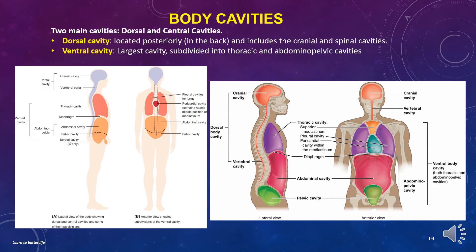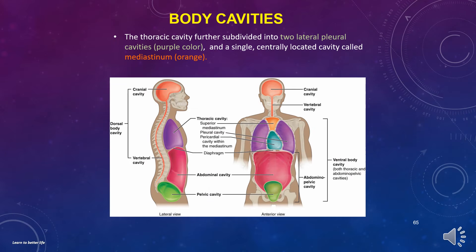Now we have to learn the body cavities. There are two main cavities: dorsal and ventral. The dorsal cavity is located posteriorly, in the back, and includes the cranial and spinal cavities. The ventral cavity is the largest cavity, subdivided into thoracic and abdominopelvic cavities. The thoracic cavity is further subdivided into two lateral pleural cavities and a single centrally located cavity called the mediastinum.